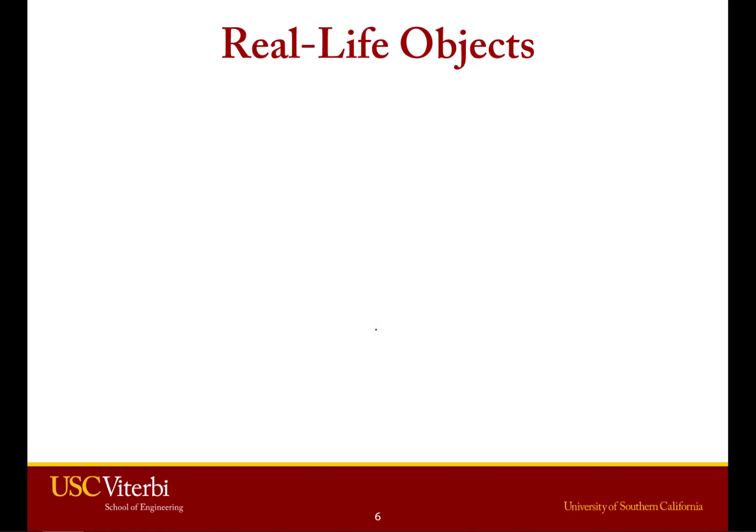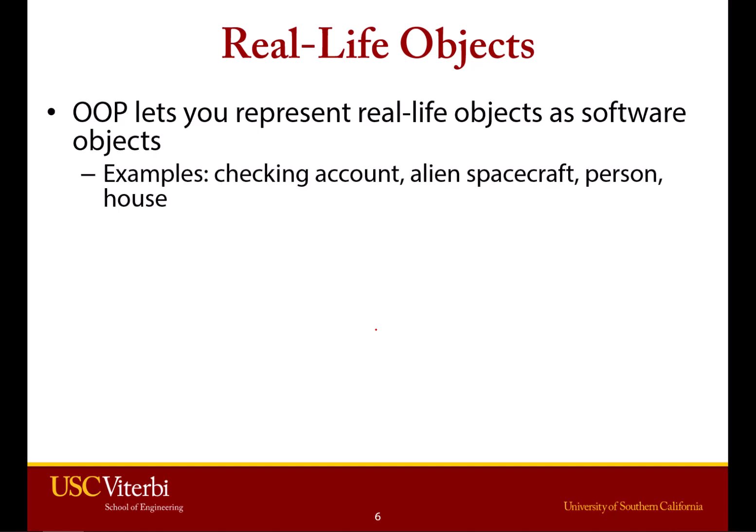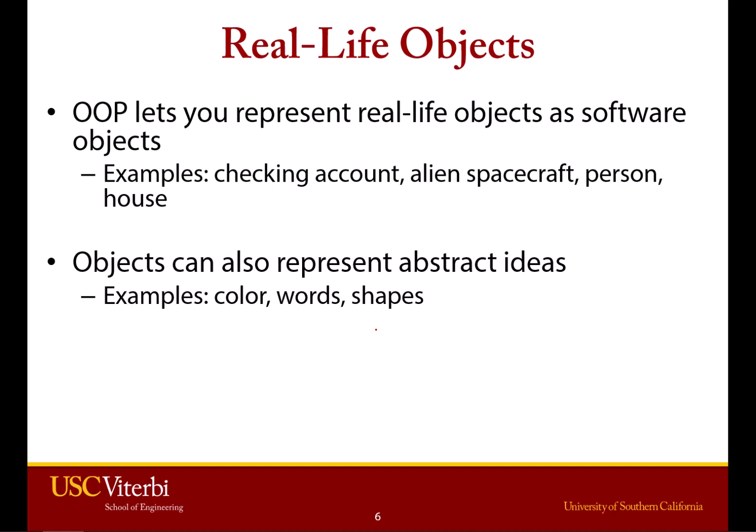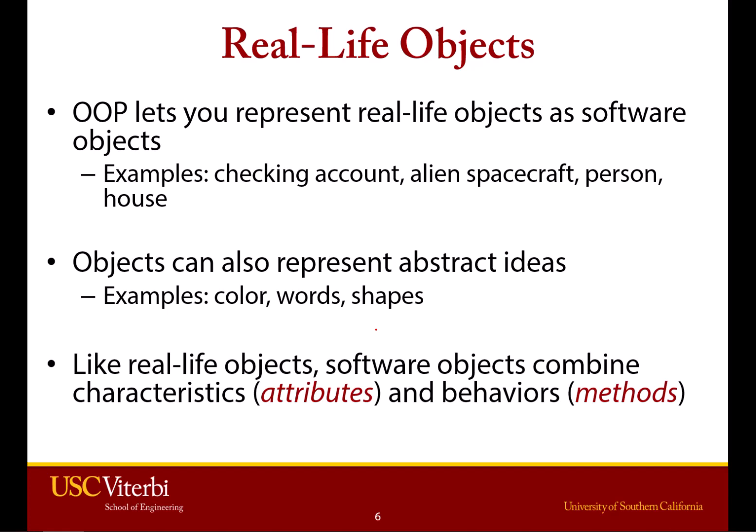To give some examples of a real-life object: we can use this OOP approach to represent a real-life object in software. You might want to represent a checking account, a spacecraft, a person, a house, or a fruit. Objects aren't limited to real things either — we can use them to represent colors, shapes, or words, things that are not concrete. Like a real-life object, a software object is a container that gives you characteristics and behaviors — or attributes and methods — basically some storage of data and some kind of action.